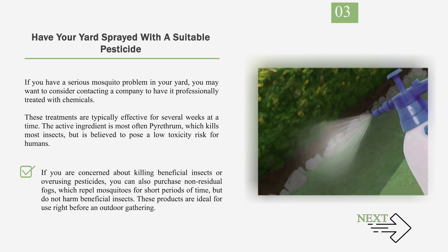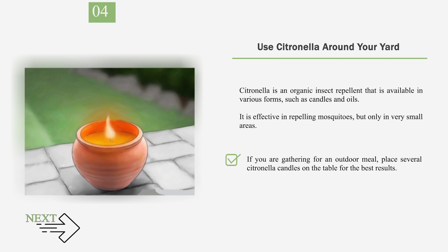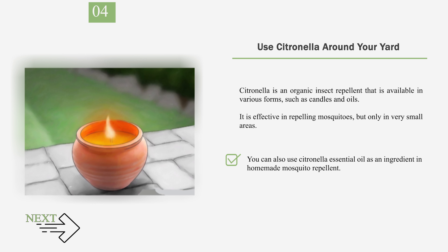If you are concerned about killing beneficial insects or overusing pesticides, you can also purchase non-residual fogs, which repel mosquitoes for short periods of time but do not harm beneficial insects. These products are ideal for use right before an outdoor gathering. Number 4: Use citronella around your yard. Citronella is an organic insect repellent available in various forms, such as candles and oils. It is effective in repelling mosquitoes but only in very small areas. For an outdoor meal, place several citronella candles on the table. You can also use citronella essential oil as an ingredient in homemade mosquito repellent.